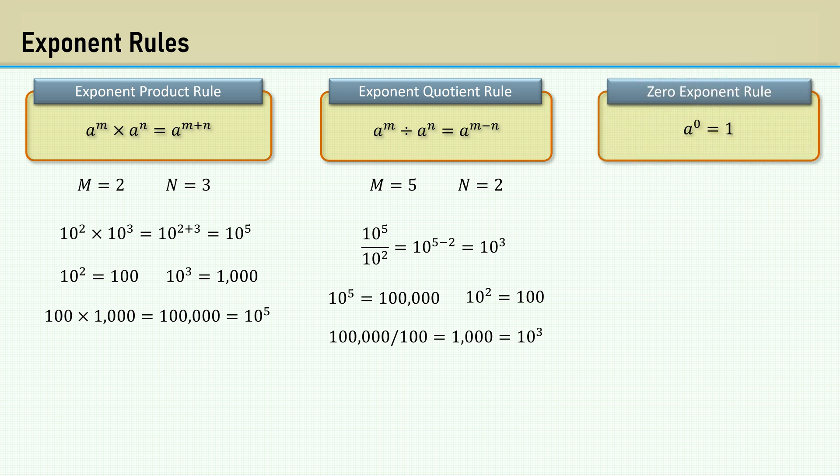The 0 exponent rule states that a raised to the power of 0 is 1, where a could be any number. Some people have a hard time wrapping their head around that. Here's a way that it can be explained. Using the exponent product rule, which is a raised to the power of m times a raised to the power of n is equal to a raised to the power of m plus n. Let's say n is 0. That would result in a to the m plus 0, which is a to the m power. Divide both sides by a to the power of m and those terms cancel and you get a to the 0 power is equal to 1.